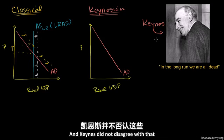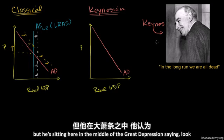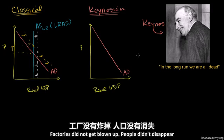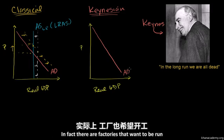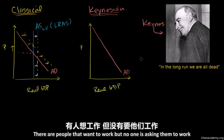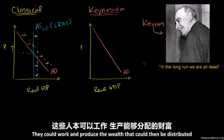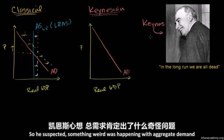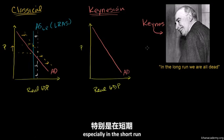Keynes did not disagree with that. But he's sitting there in the middle of the Great Depression saying, look, all of a sudden people are poor in the 1930s. Factories did not get blown up, people didn't disappear. In fact, there are factories that want to be run but they're being shuttered down because no one is demanding goods from them. There are people that want to work, but no one is asking them to work. They could work and produce the wealth that could be distributed to society, but no one's demanding for them to do it. So he suspected something weird was happening with aggregate demand, especially in the short run.